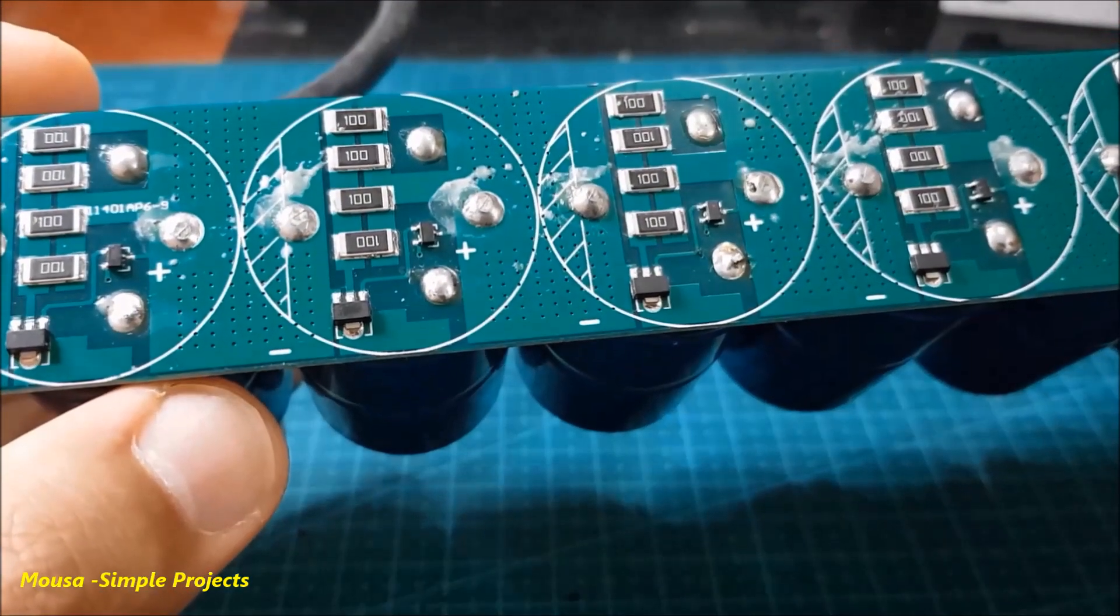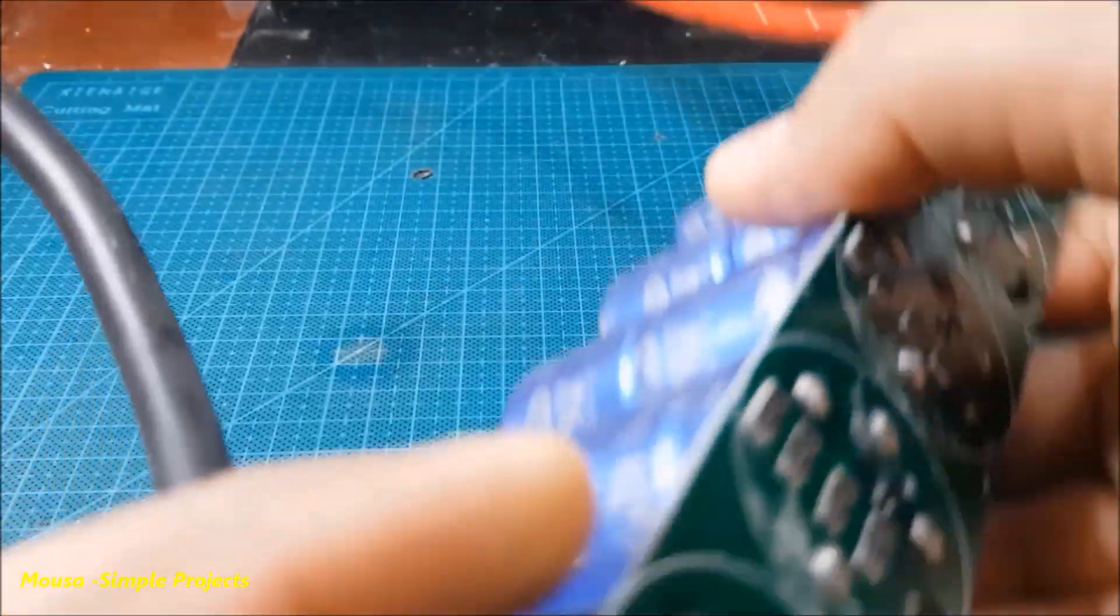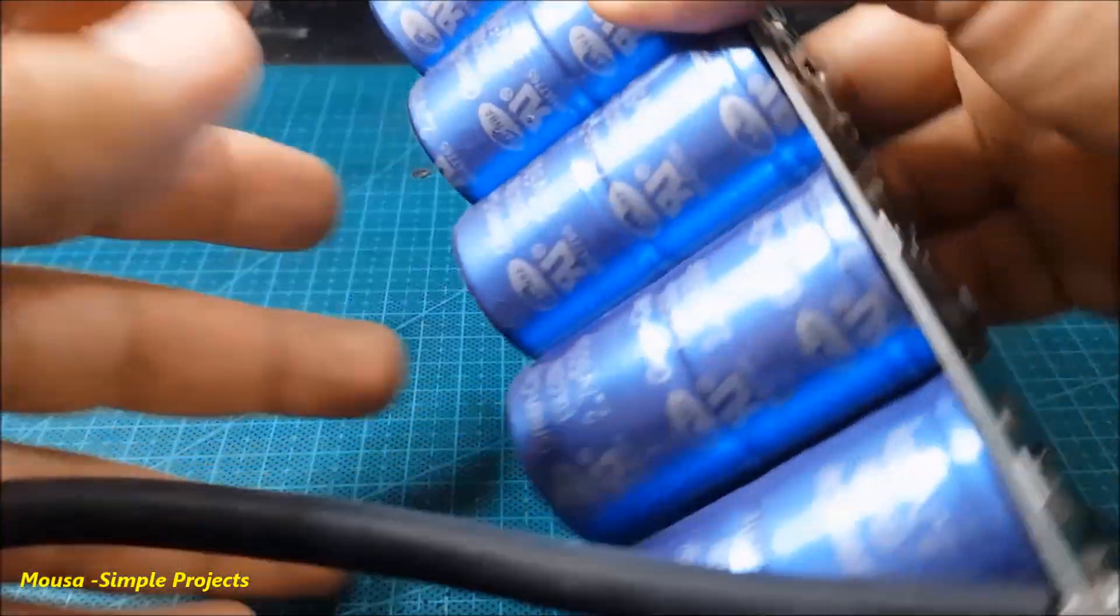I bought it from China for about 40 bucks. This capacitor bank consists of six 500 farad capacitors connected together in series.